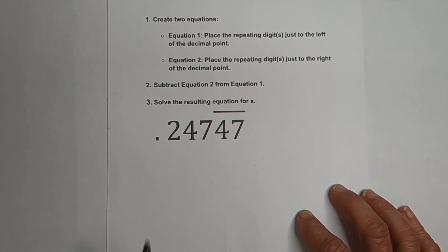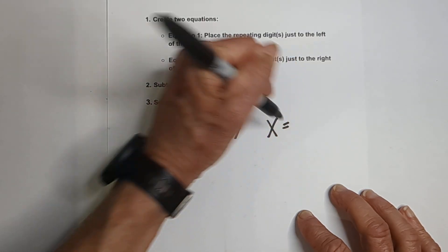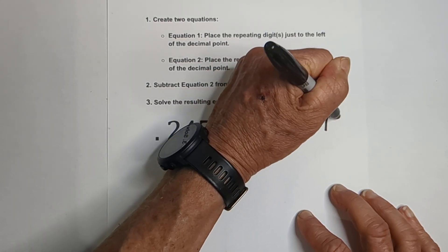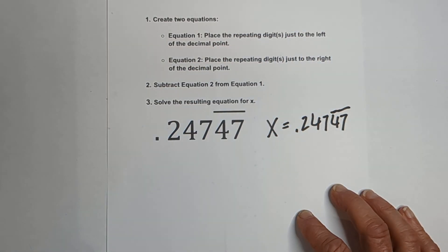So let me work this out, and I think it'll make sense and hopefully be helpful. X, let's first set an equation. X is equal to 2.4747 repeating. Okay, actually, the 47 is repeating.